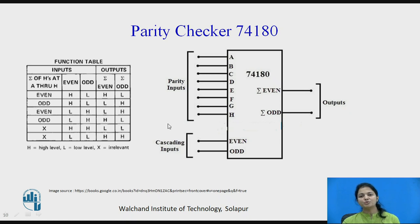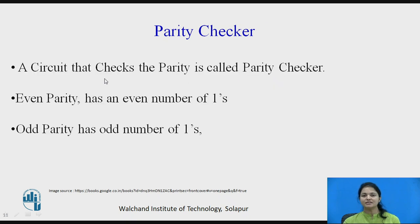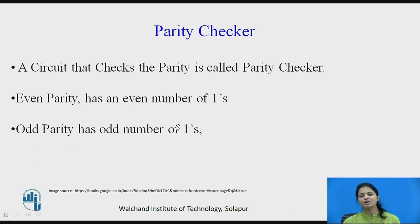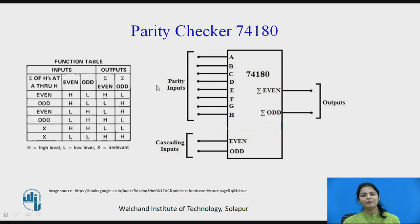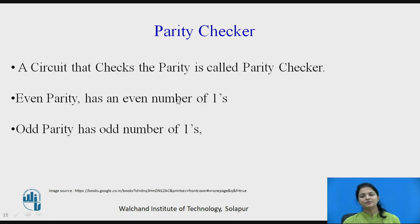Now we will see one more circuit — the parity checker, which is the 74180 IC. A parity checker is a circuit that checks the parity of a number. When the number of 1s in a number is even, it is called even parity; when the number of 1s is odd, it is called odd parity.